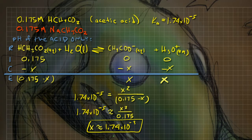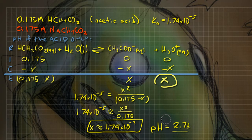Now I take the negative log of this concentration. Why? Because this concentration is the hydronium. So negative log of that gives me the pH, which is going to be equal to 2.758. So far so good. That's what I get for just finding out the pH of the acetic acid in water only.